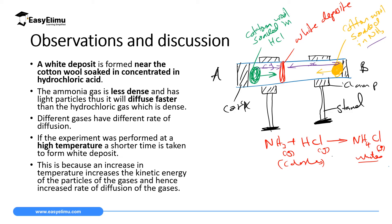The reason ammonia covers a larger distance is because its mass is 17 grams, while HCl has a mass of 36.5 grams. HCl is very heavy with a large mass, so its rate of diffusion is slow. Ammonia has low density and moves fast, covering a large distance.